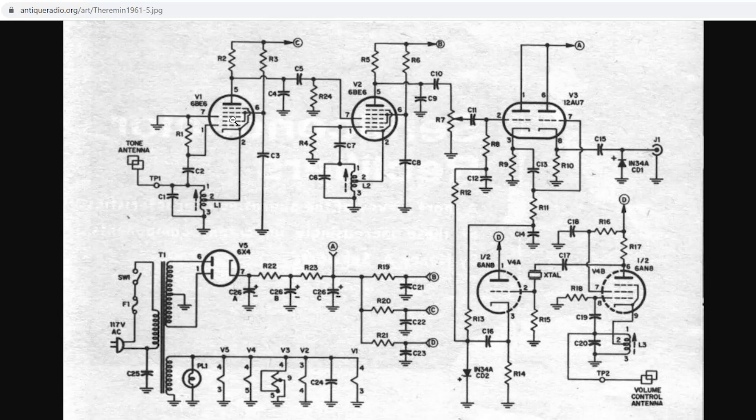Now imagine that this tube, we move our hand closer to it, and this is instead oscillating at 450.44 kHz. And this one is still oscillating at 450 kHz exactly. Now something interesting is going to happen. The sum of that is obviously too big and is going to be filtered away, but the difference is 440 Hz.